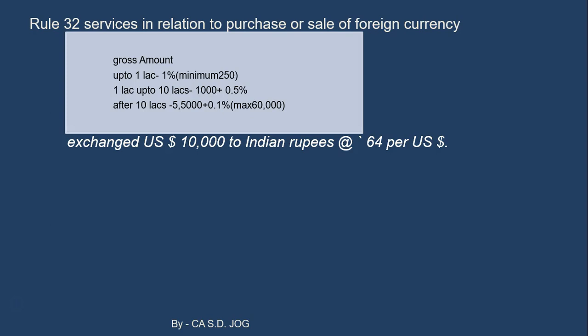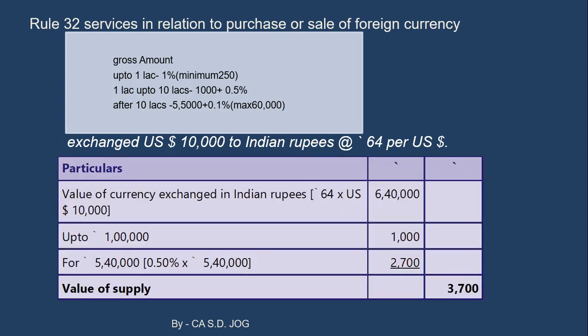Under Option B, if Option A is not applied, a slab-wise rate applies: up to Rs. 1 lakh, Rs. 1 lakh to Rs. 10 lakh, and above Rs. 10 lakh. For example, exchange 10,000 US dollars to Indian rupees at Rs. 64 per USD. The dealer is not opting for Option A. The value of currency exchange in Indian rupees is 64 × 10,000 = Rs. 6,40,000. This Rs. 6,40,000 is then applied to the slabs.